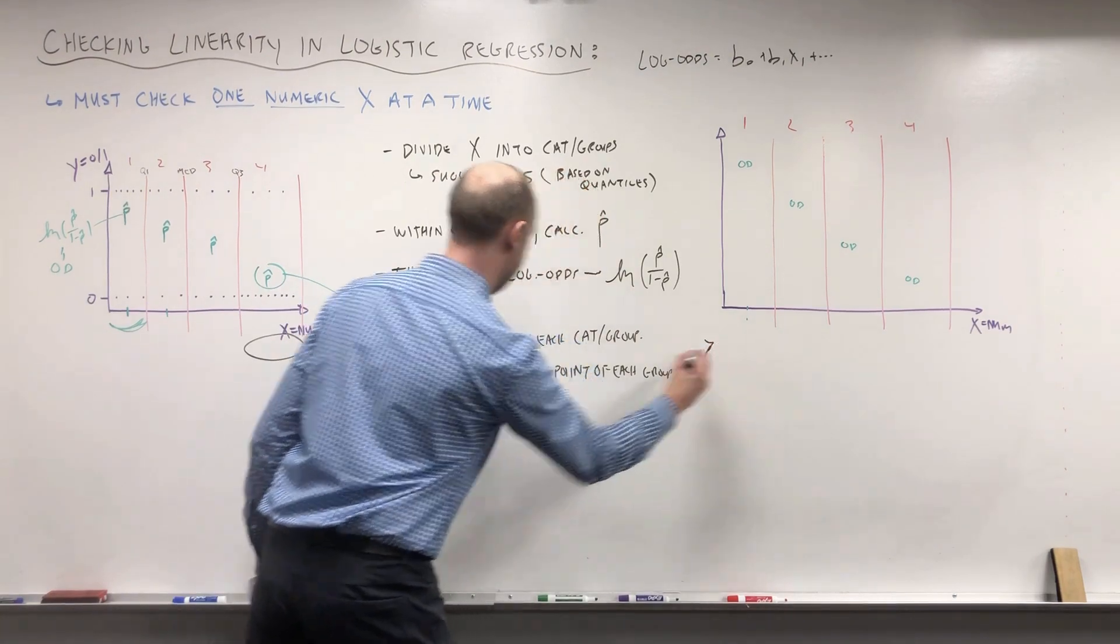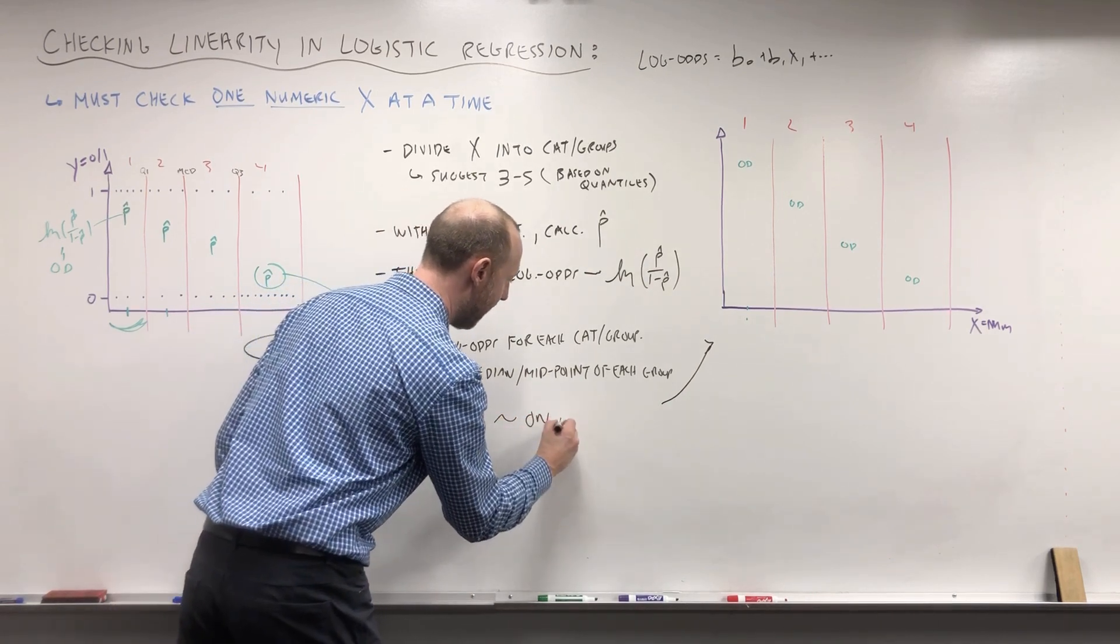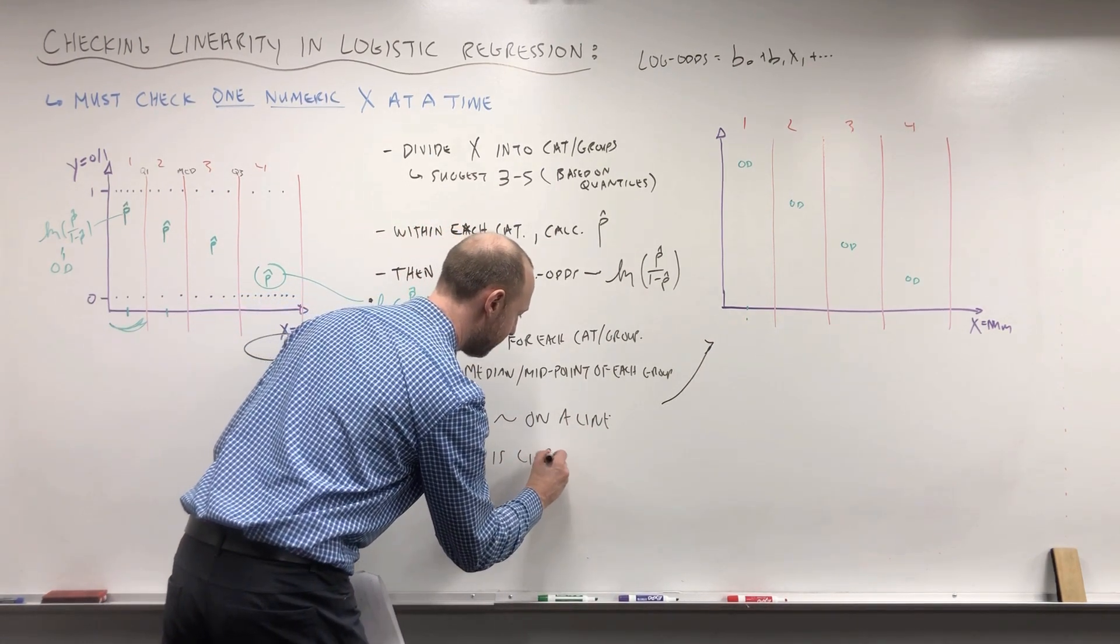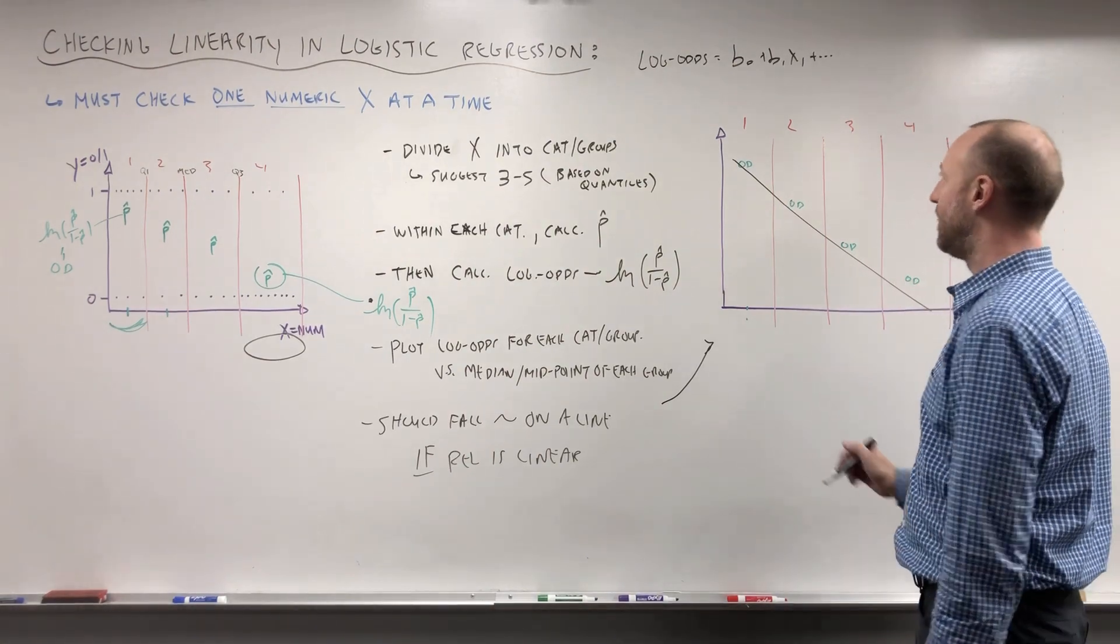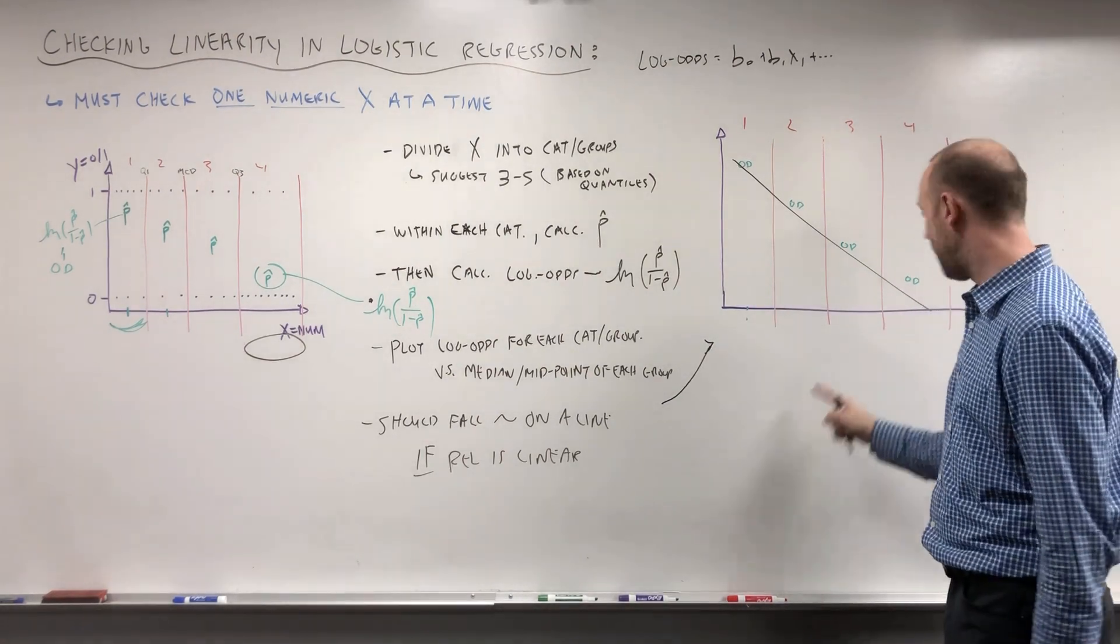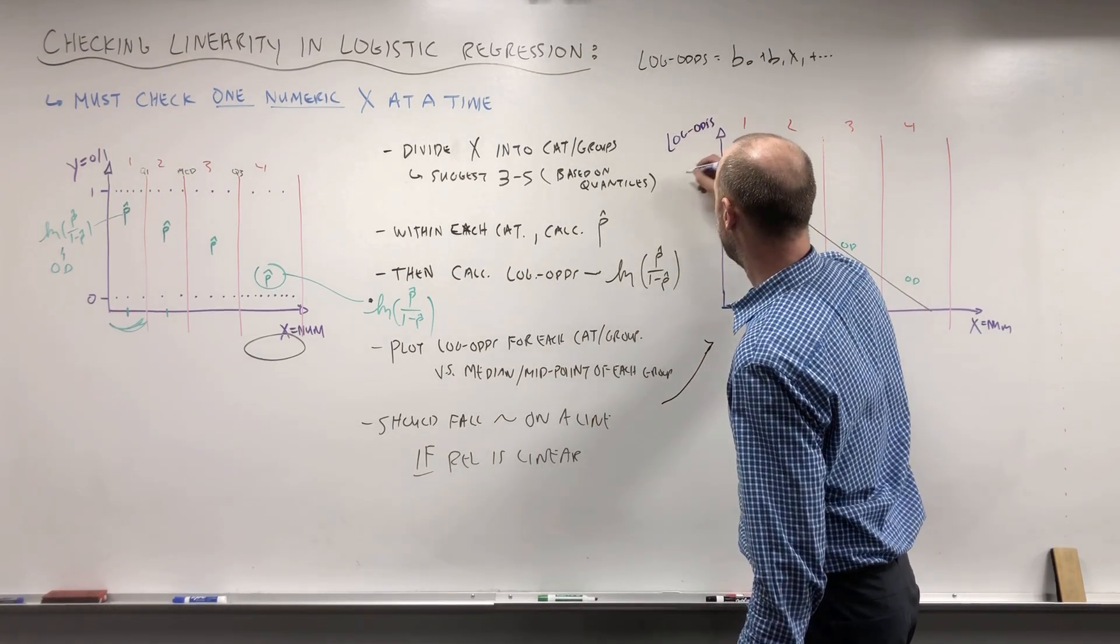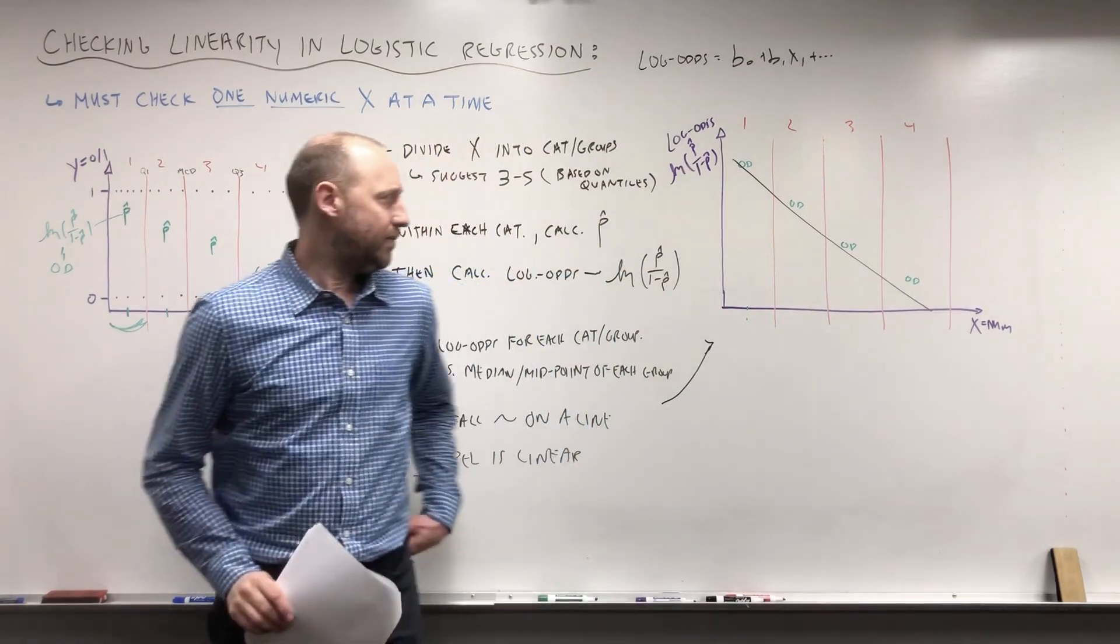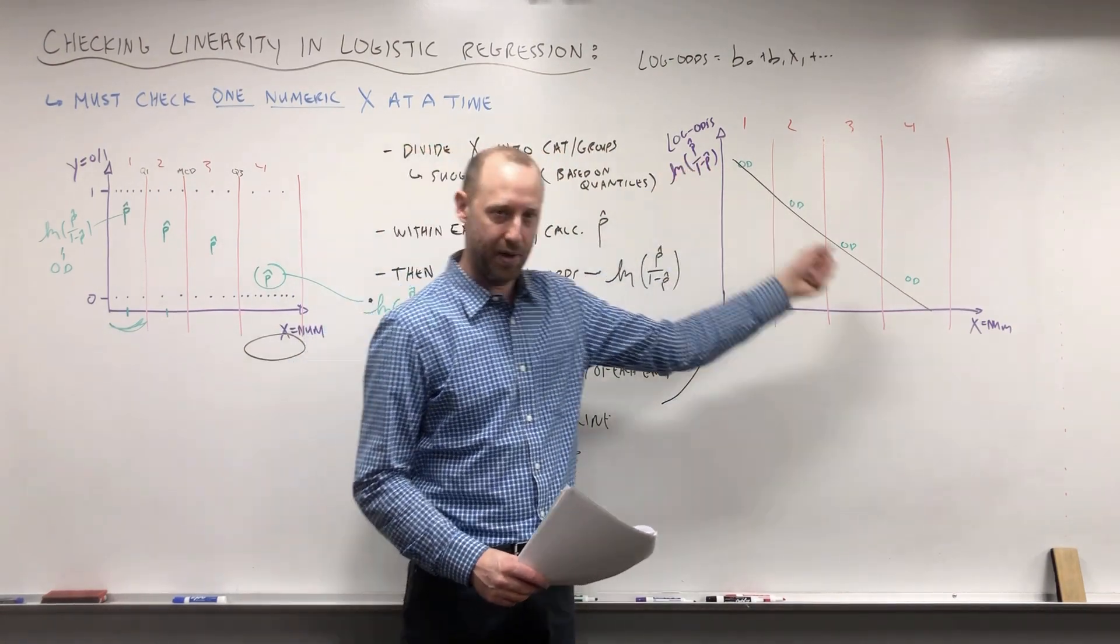This plot here, the points should fall roughly on a line if the relationship is linear. So these points should fall approximately on a line if the relationship between the numeric x and the log odds is linear. Because you can see here what we've done is we've created a plot. We're plotting x versus the log odds, or the log of p over 1 minus p. So this is a way we can check does the relationship between a numeric x and the log odds of the outcome appear to be approximately linear.